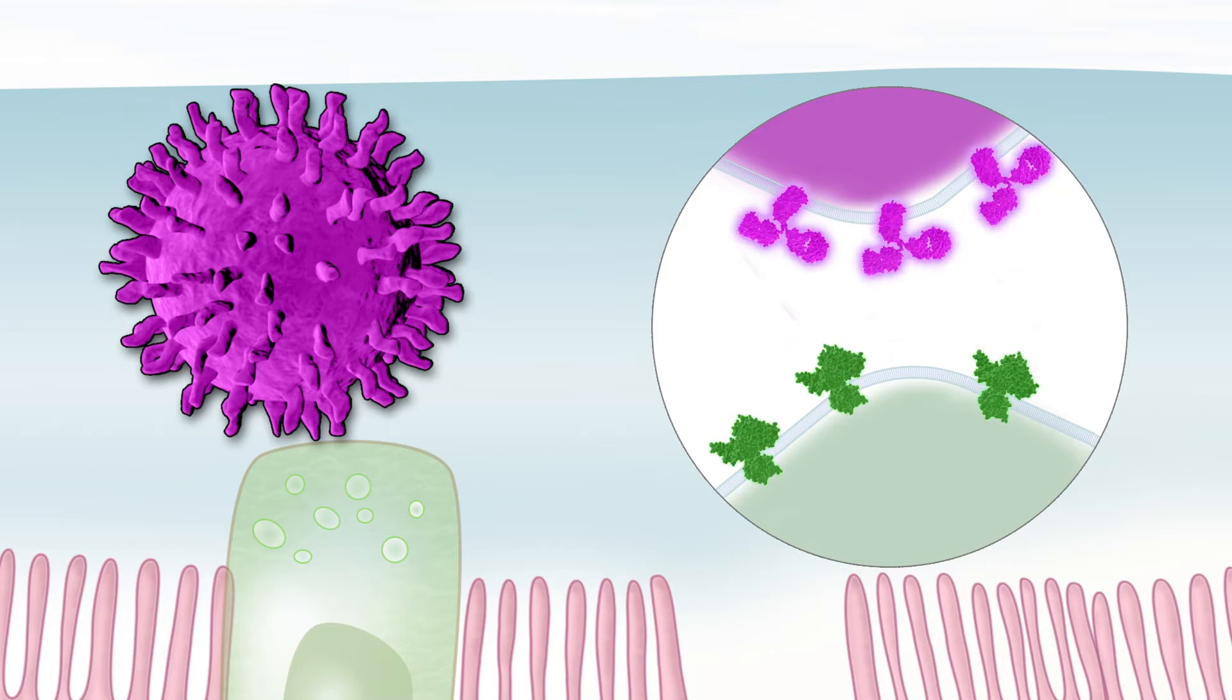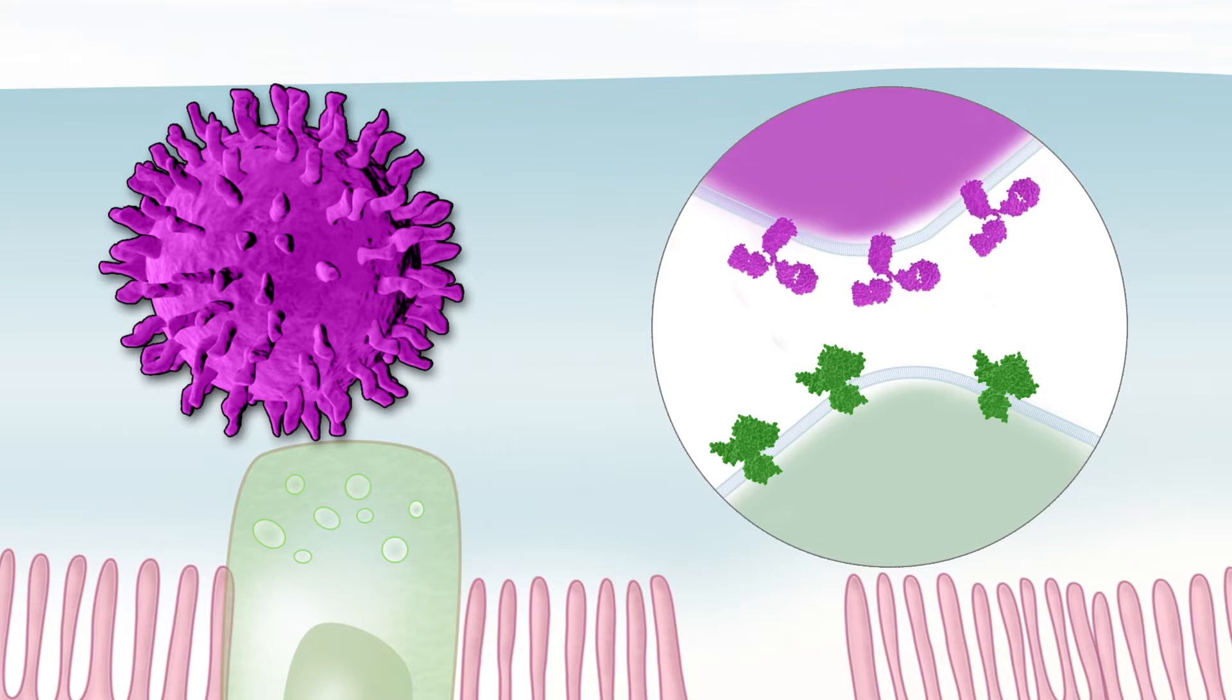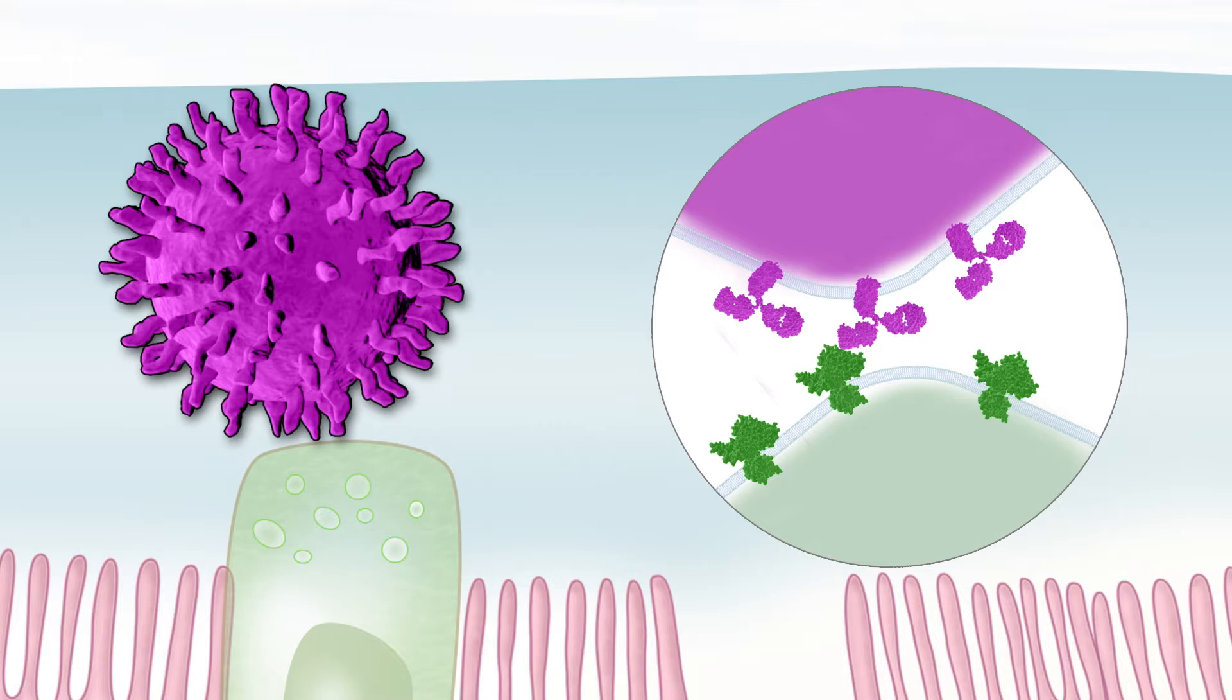Therapeutic cells can then be engineered to express surface markers that allow them to home to the zip code of a targeted tissue or organ, just like a GPS system directing a vehicle to its destination.